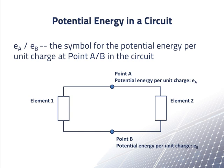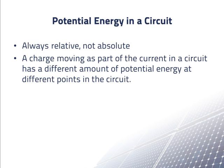Mobile electrons at these points actually have potential energies negative E sub A and negative E sub B. Potential energy is always relative to the position of other bodies, not absolute. A charge moving as part of the current in a circuit has a different amount of potential energy at different points in the circuit.